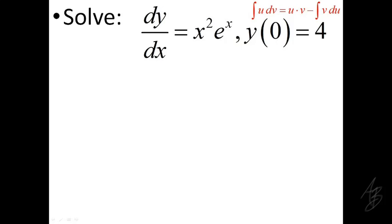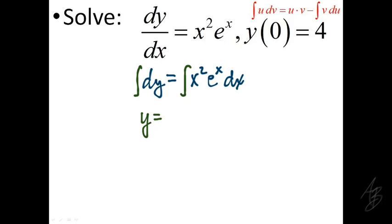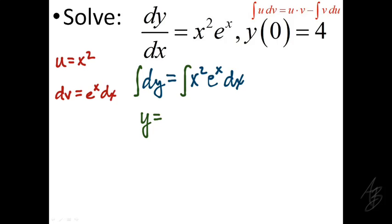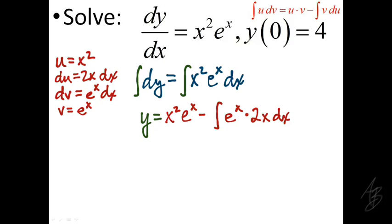Now let's use integration by parts to solve a differential equation: dy/dx equals x squared times e to the x. We integrate both sides to find y. We choose u equals x squared because its derivative, 2x, reduces the power, and dv equals e to the x dx because the integral of e to the x is still e to the x. So du equals 2x dx and v equals e to the x.